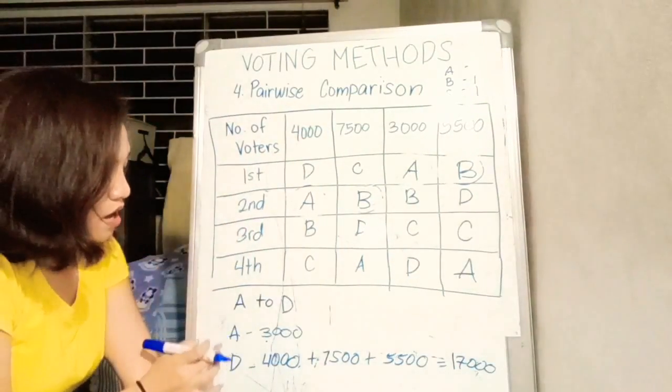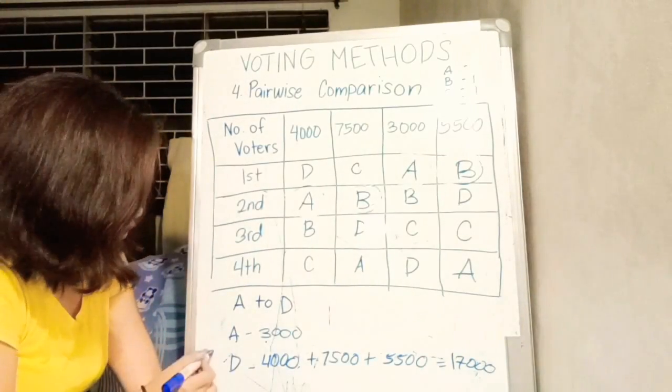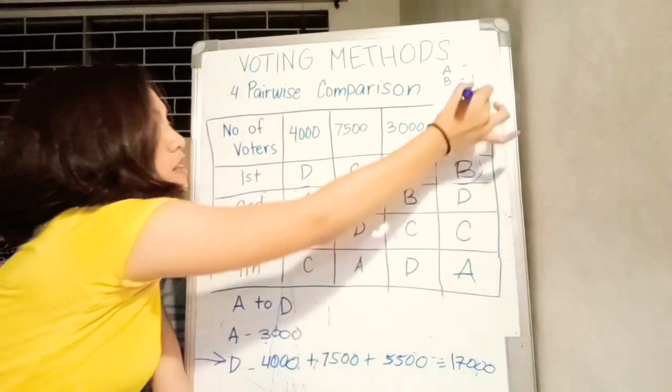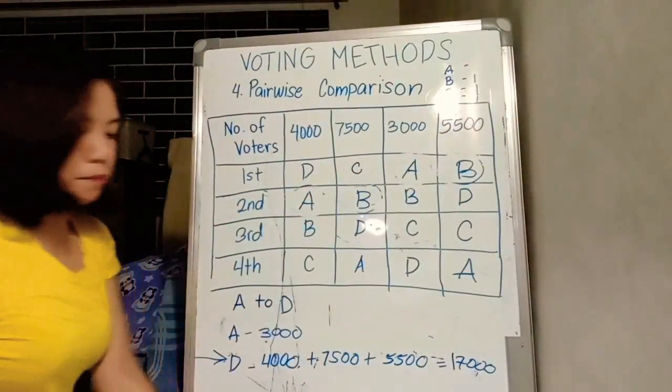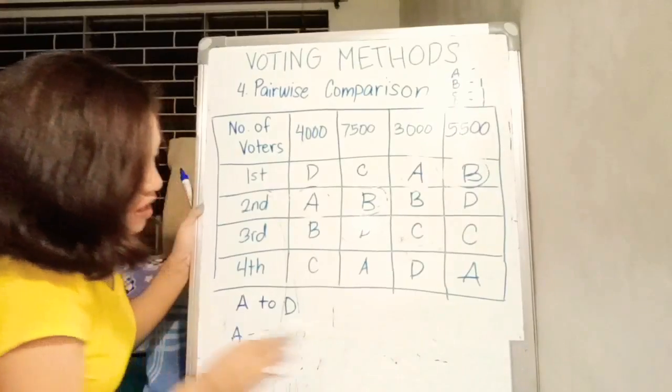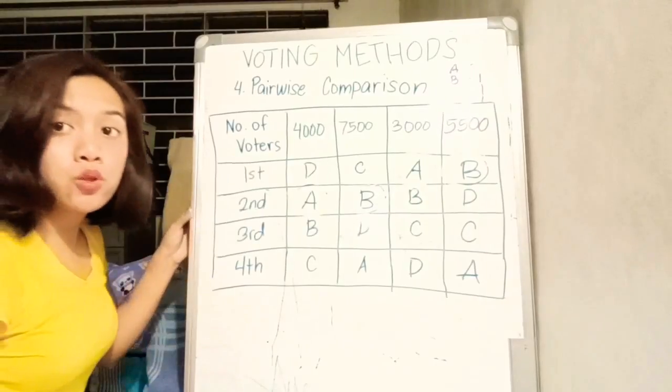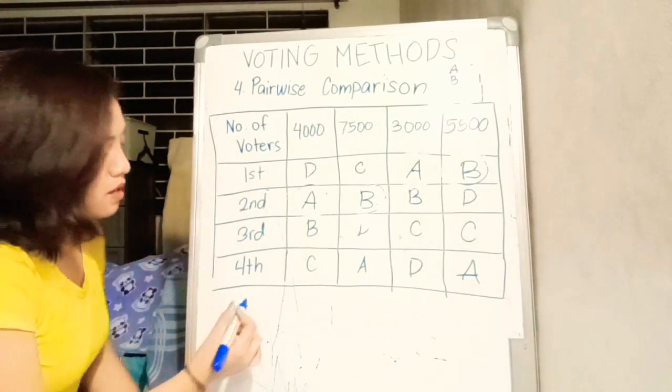17,000 votes. 17,000 voters prefer D over A. We award the points to candidate D, so may 1 point na din siya. Next, we will compare B and C ngayon, since na-compare na natin yung A to all candidates.